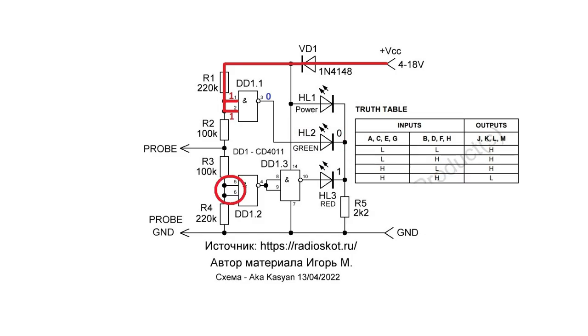The inputs of the lower element are pulled to ground by a resistor, which provides a low level at the inputs. So we got a high level at the output. This high level is fed to the inputs of the third element. According to the truth table, with the high level on the inputs, the output will be low. The red LED will also not glow.